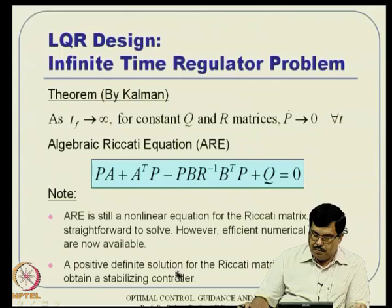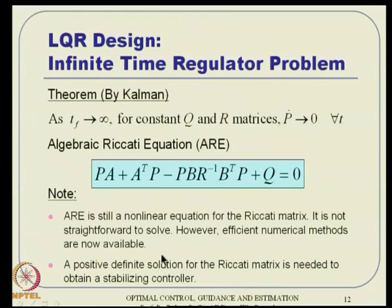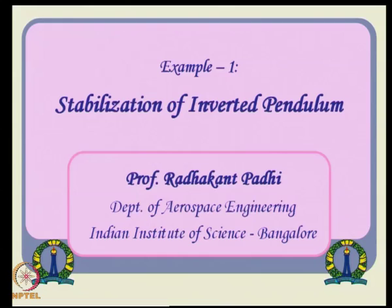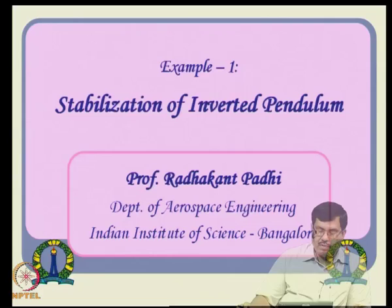A positive definite solution for the Riccati matrix is needed to obtain a stabilizing controller. Since the ARE is non-linear, it can admit multiple solutions; you must discard all others and take the positive definite solution. With a positive definite P, many good properties follow. Before going further (which we will do in the next class), let us look at some example problems that will clarify these ideas.